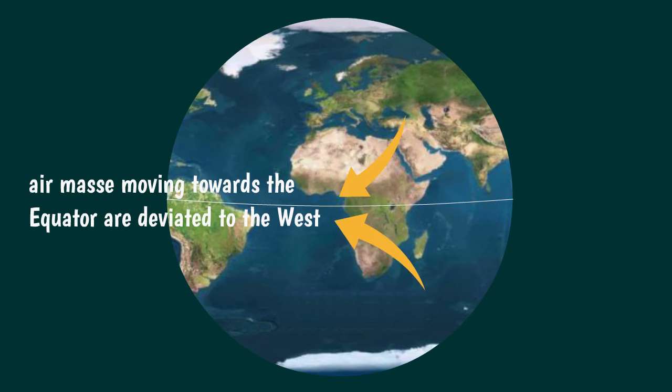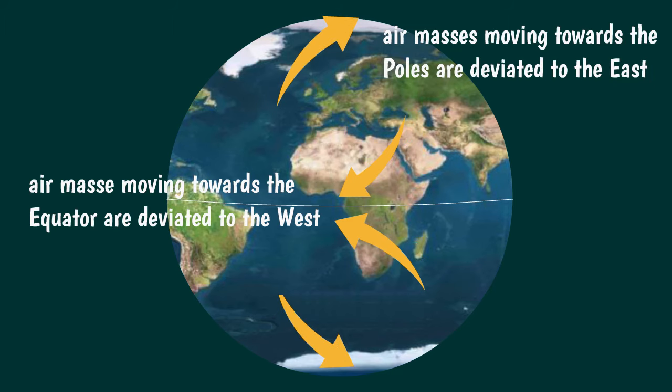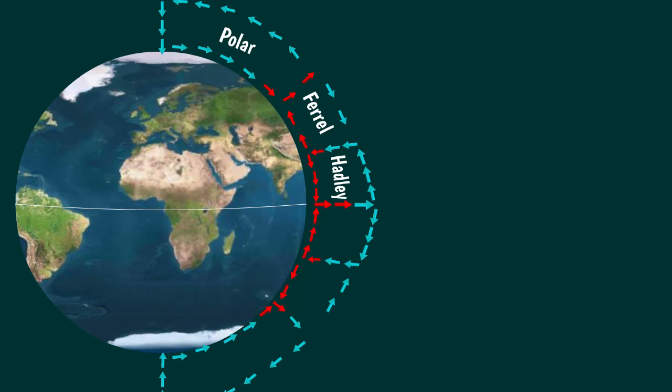When they move towards the equator they are deviated towards the west, and on the contrary when they travel towards the poles they turn towards the east. So the Coriolis effect causes air moving from areas at 30 degrees latitude towards the equator to turn west.